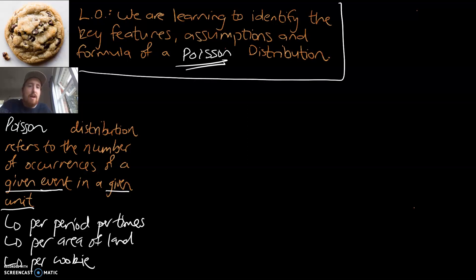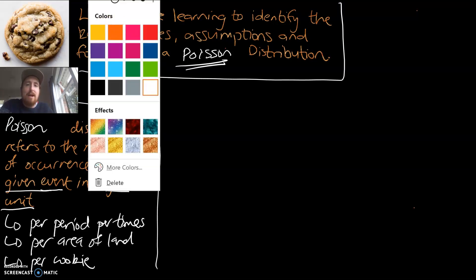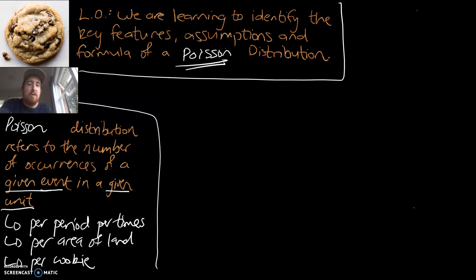So we've got up there our learning objective. Down the bottom, we've got our definition and some examples of units. Let's change pen color and run through the assumptions of a Poisson distribution.